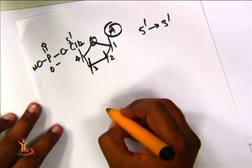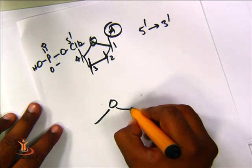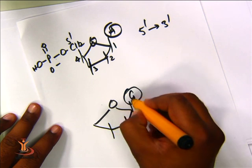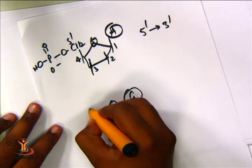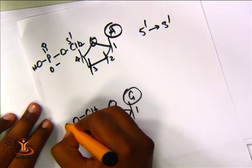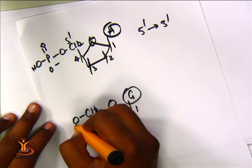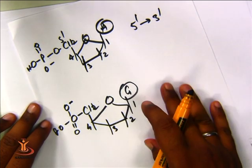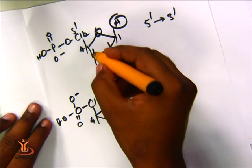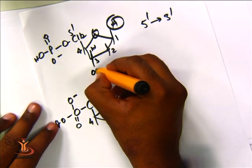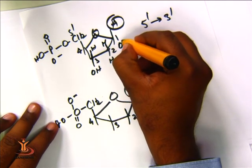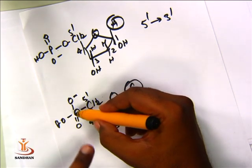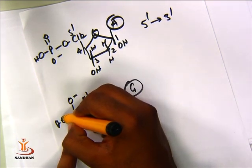Drawing a second deoxyribose sugar with guanine at carbon 1 to illustrate how phosphodiester bonds form: the phosphoric acid at carbon 5 of one nucleotide reacts with the hydroxyl at carbon 3 of the adjacent nucleotide, linking the two sugars and forming the 5' to 3' phosphodiester bond that runs along the polynucleotide backbone.